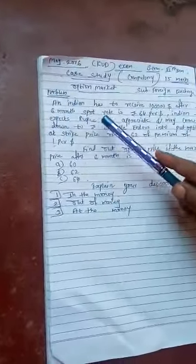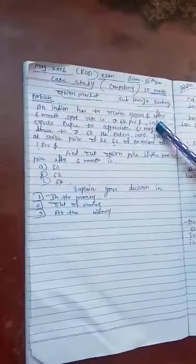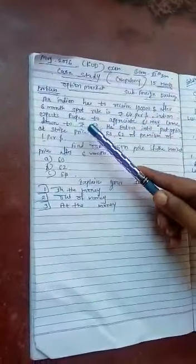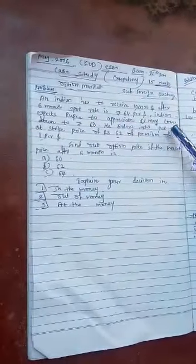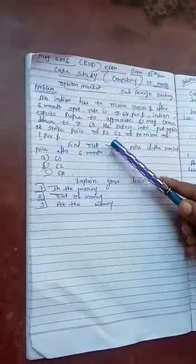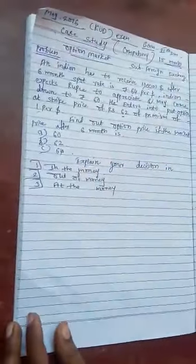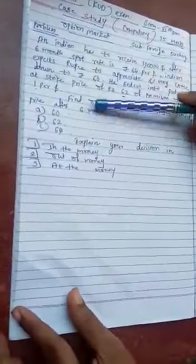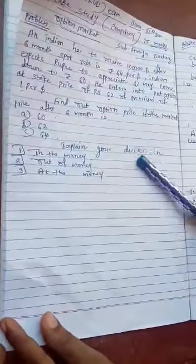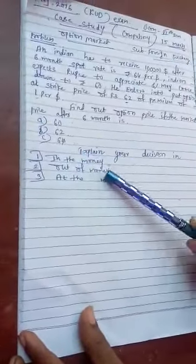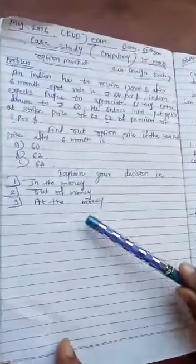The problem is: An Indian has to receive 1 lakh dollars after 6 months. Spot rate is Rs. 64 per dollar. Indian expects rupees to appreciate and may come down to Rs. 60. He enters into put options at strike price of Rs. 62 with a premium of 1 per dollar. Find out option price when the market price after 6 months is Rs. 60, 62, and 64, and explain your decision for in the money, out of money, and at the money.